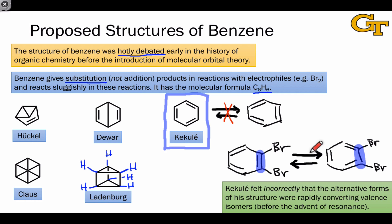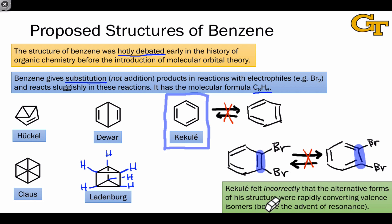So while Kekulé was definitely on the right track with his alternating single and double bond structure, he was missing the key idea of electron delocalization that's essential to the structure of benzene. That said, he did a pretty good job considering that he came up with this structure long before resonance was invented as a concept.